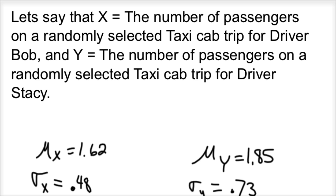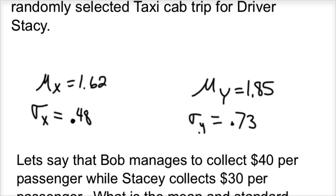Let's do an example. X is the number of passengers on a randomly selected taxicab trip for driver Bob, and Y equals the number of passengers on a randomly selected taxicab trip for driver Stacy. We have this data on these two drivers. Bob carries 1.62 passengers per trip with a standard deviation of 0.48, almost half a passenger. Stacy carries 1.85 passengers per trip with a standard deviation of 0.73.